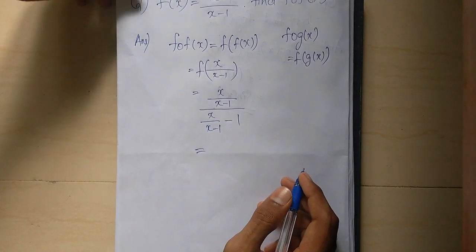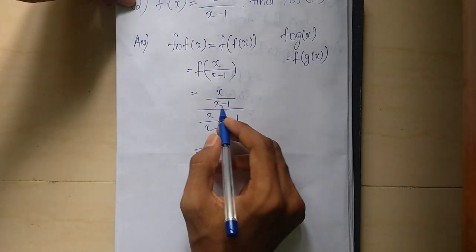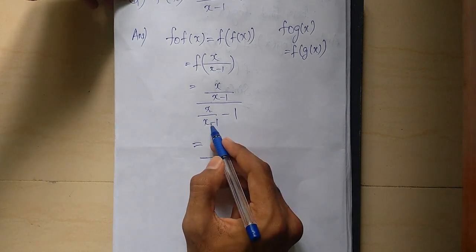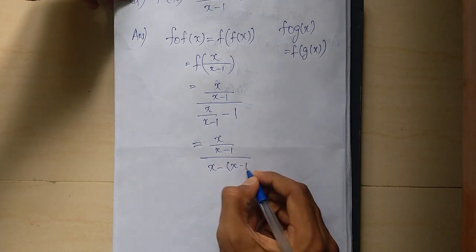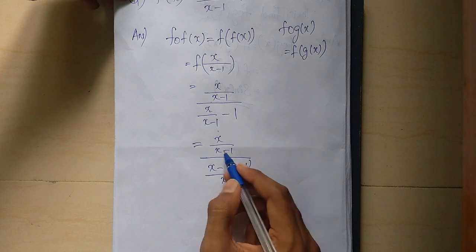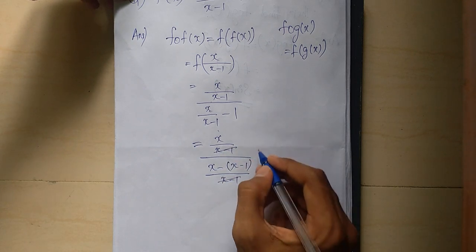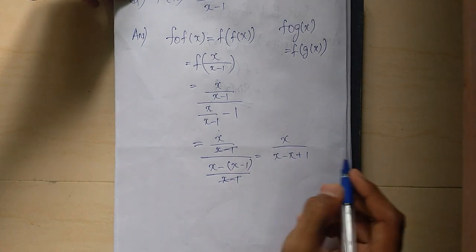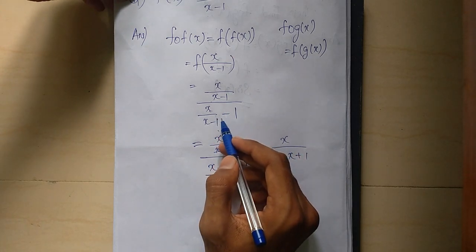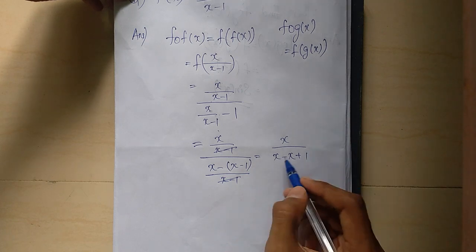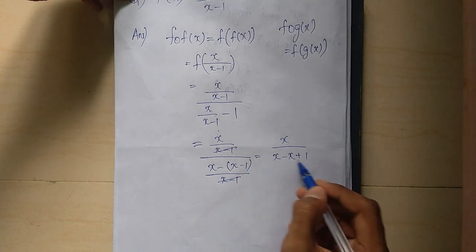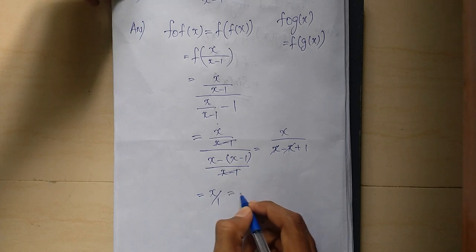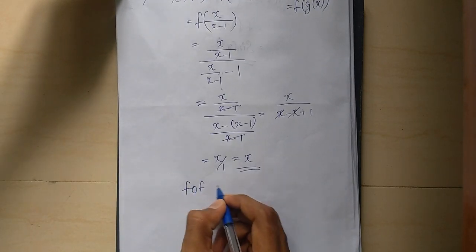So x over x minus 1, divided by x minus 1 into 1, which is x minus 1 over x minus 1. Simplifying: x minus 1 cancels, x minus x plus 1 in the denominator. The result simplifies to x over 1, which equals x. So f composition f of x equals x.